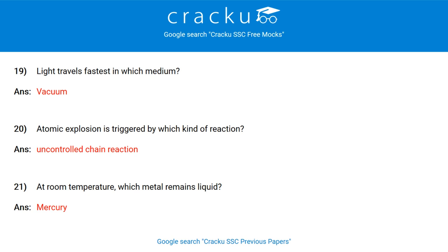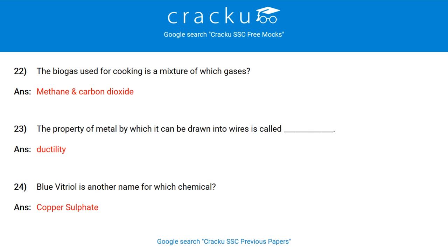Light travels fastest in which medium? Vacuum. Atomic explosion is triggered by which kind of reaction? Uncontrolled chain reaction. At room temperature, which metal remains liquid? Mercury. The biogas used for cooking is a mixture of which gases? Methane and carbon dioxide. The property of a metal by which it can be drawn into wires is called ductility. Blue vitriol is another name for which chemical? Copper sulphate.